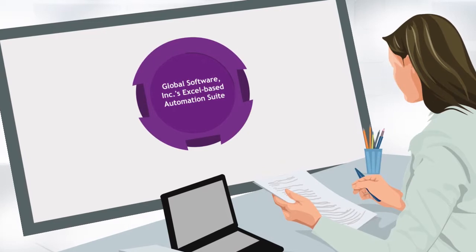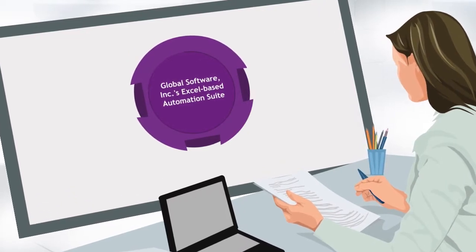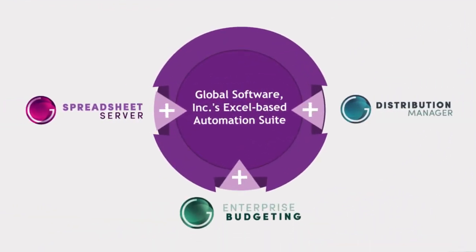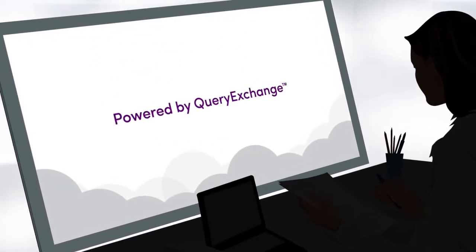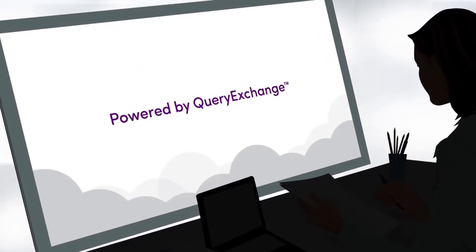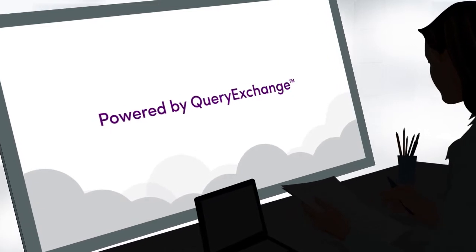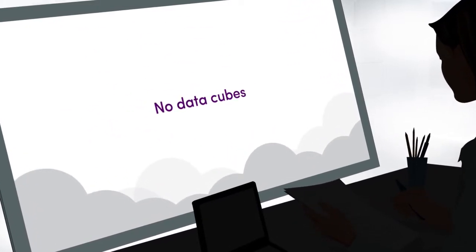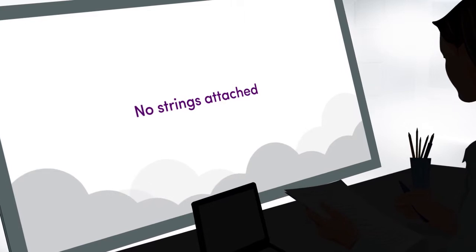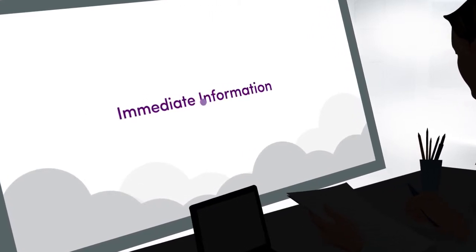Global Software Incorporated's Excel-based AutomationSuite is made up of three components. Spreadsheet Server, powered by Query Exchange, provides access to all of your data in Excel — JD Edwards and beyond. This means no data staging areas, no data cubes, no strings attached for you. Immediate information.